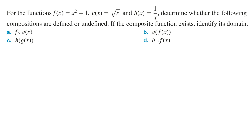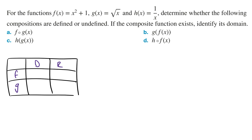Part A: f of g of x. To determine if f of g of x exists, you first need to check whether the range of the inner function is equal to or a subset of the domain of the outer function. To do this, you need to draw a table and write down the domain and range of each of the functions.